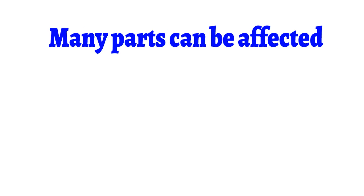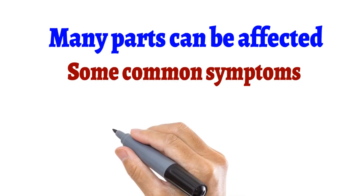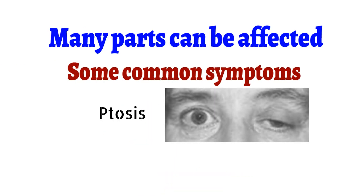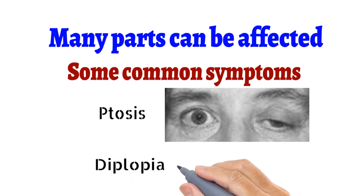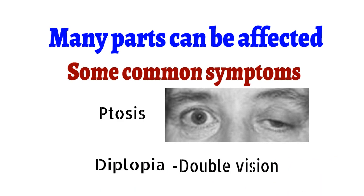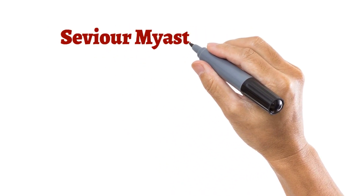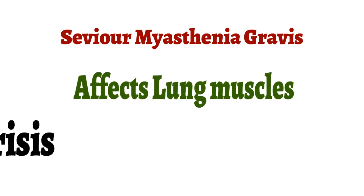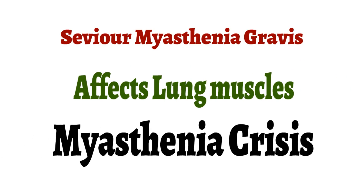Many parts of the body can be affected in Myasthenia Gravis, but there are some common symptoms observed in every case. First is ptosis — that is drooping of the eyelid. Second is diplopia — that is double vision. This happens due to weakening of the ocular muscles, that is the muscles that control movement of the eye. In severe conditions, Myasthenia Gravis can affect the muscles that control breathing. Such a life-threatening condition is known as Myasthenic Crisis.